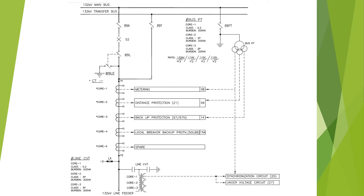Hello friends. Today I will discuss about the line earthing switch interlock for a feeder. In this diagram, a single line diagram has been shown for a feeder with one main bus and one transfer bus system.